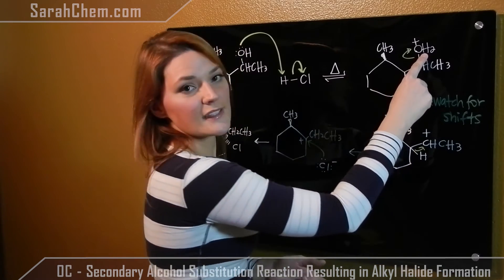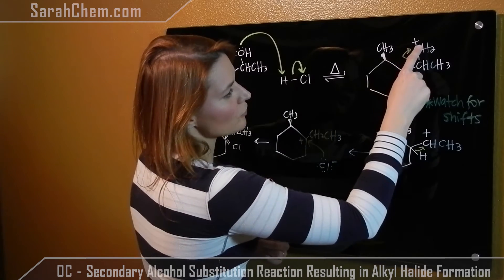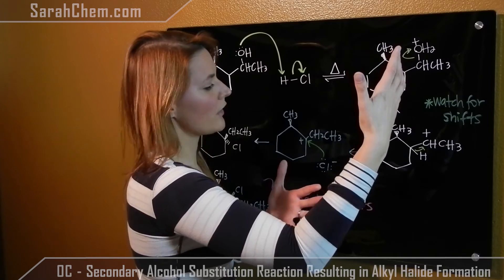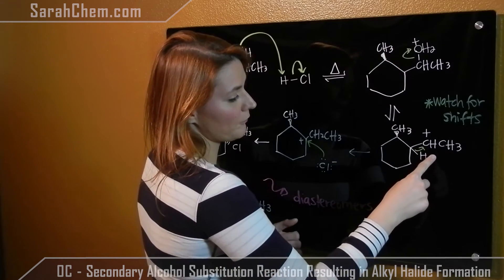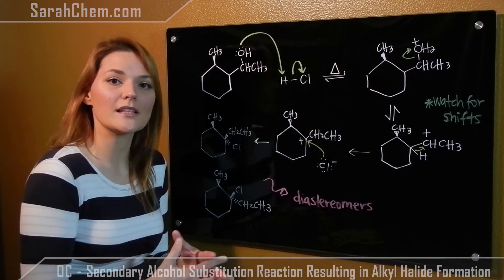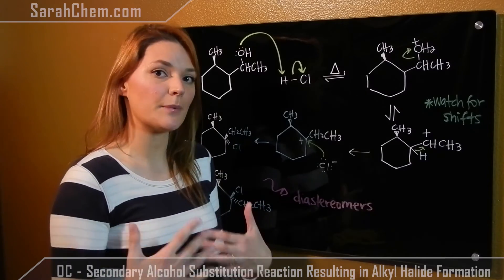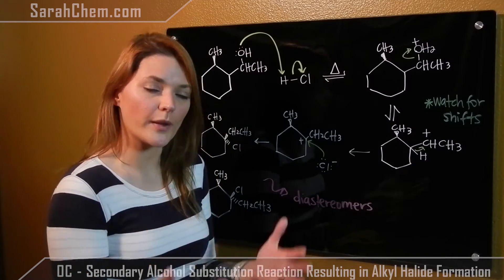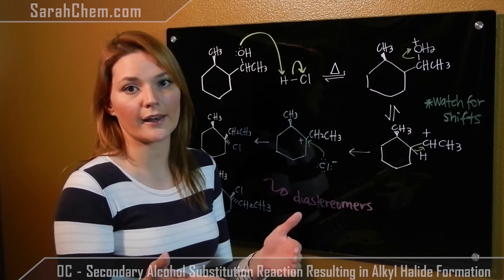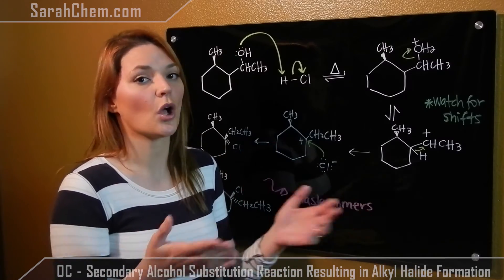Because this follows the SN1 mechanism, that OH group will now leave, taking its electrons with it, forming a carbocation. The trick with these secondary alcohols is you always have to keep in mind that because you're following an SN1 mechanism and you form a carbocation, a potential shift is always there.